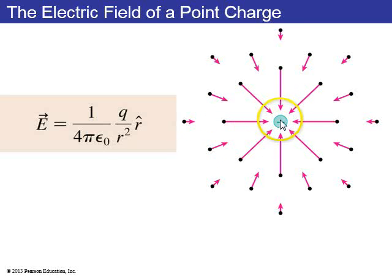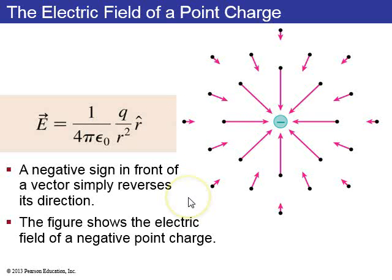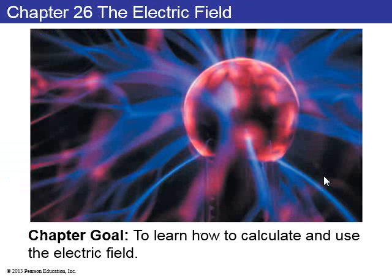If you have a negative charge, then q, so q is negative, then you'll see this electric field always points in the opposite direction of r hat. So it's towards the origin, or towards the charge q. So this figure shows the electric field of a negative point charge. And that's it for chapter 25.